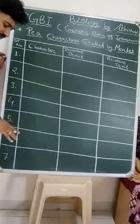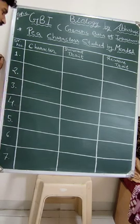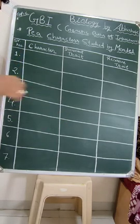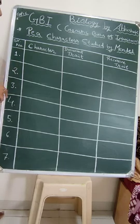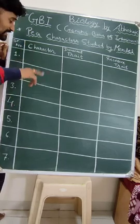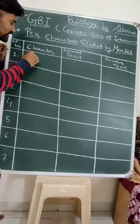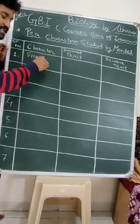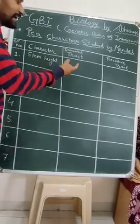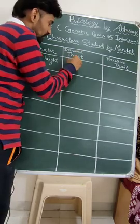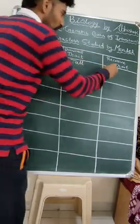To remember all these 7 characters, I will give you a few simple tricks. A column is already made and we will mention the characters. The first character of pea plant is stem height — stem height is our first character.